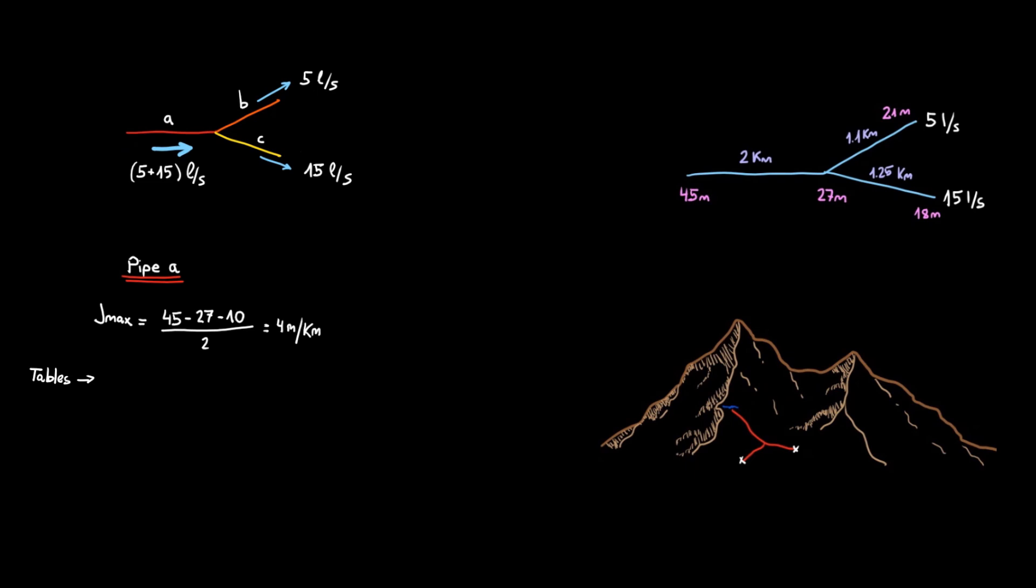In step 3 we calculate the head at the end of the pipe. We started with 45 meters and we lost 3.5 meters per kilometer. Step 4 we calculate the pressure, the head minus the elevation.